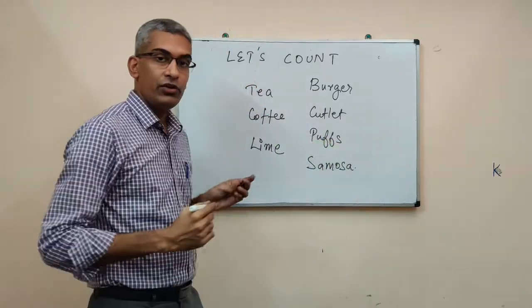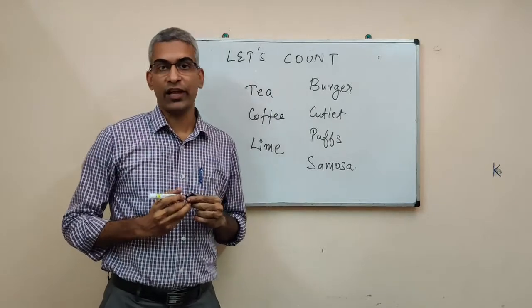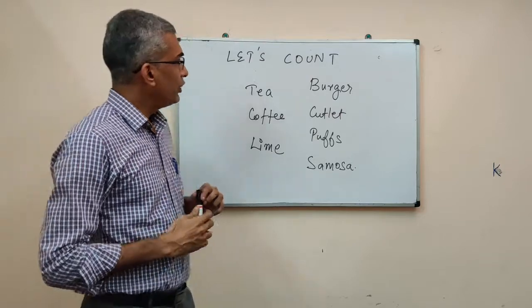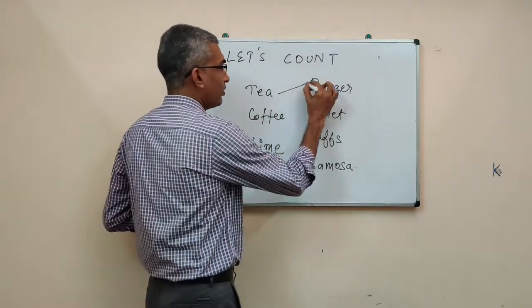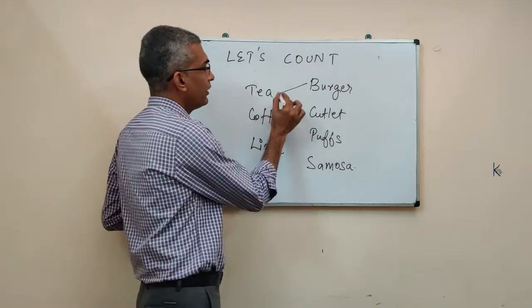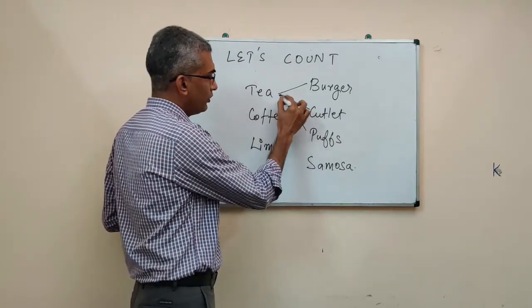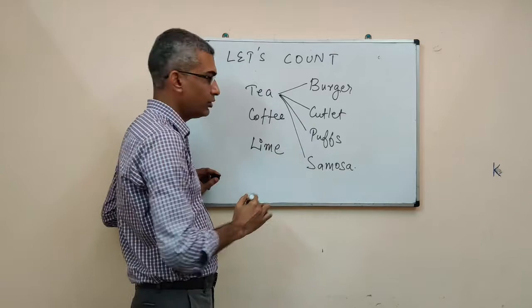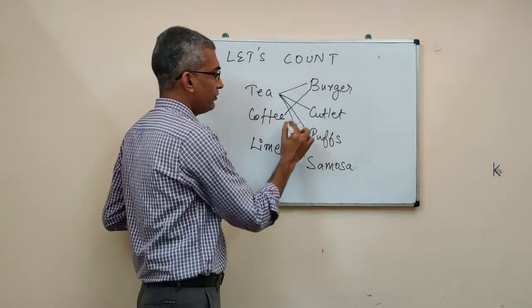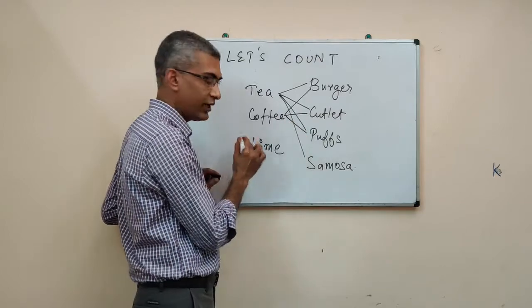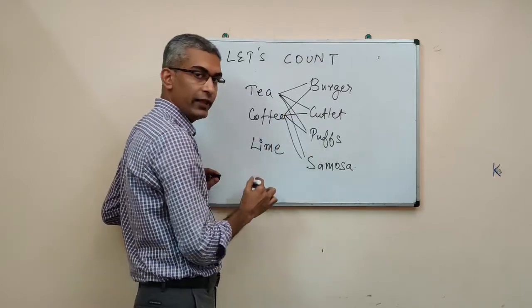As I said, you wanted to have a drink and a snack. Let us see in how many different ways you can have a drink and a snack. You could have tea and burger, one possibility. Tea and cutlet. Tea and puffs, tea and samosa, coffee burger, five, coffee cutlet, six, coffee puffs, seven, coffee samosa, eight.